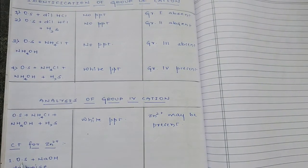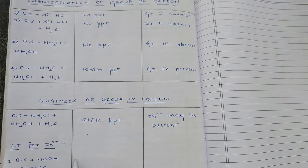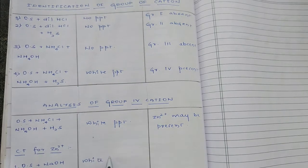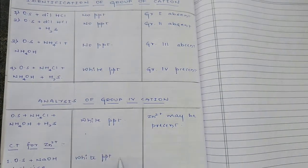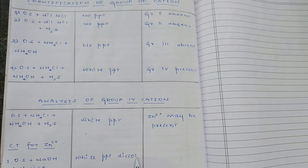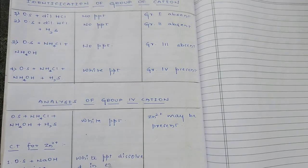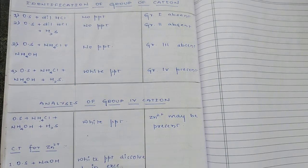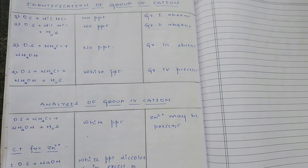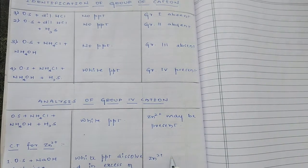Confirmatory test for Zn²⁺: original solution plus sodium hydroxide drop wise — observation: white precipitate, dissolved in excess of NaOH. Dissolved in excess of sodium hydroxide. The inference is Zn²⁺ is confirmed.